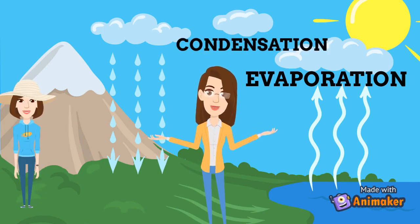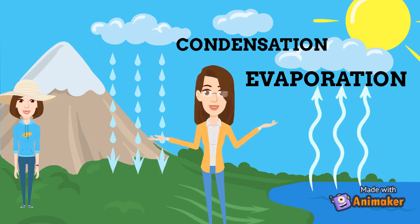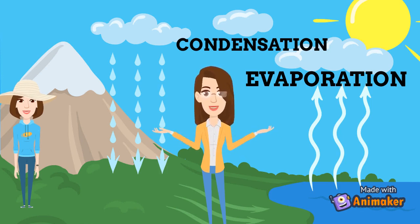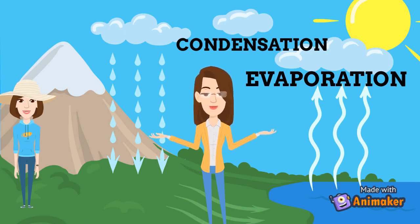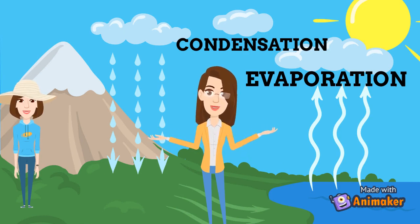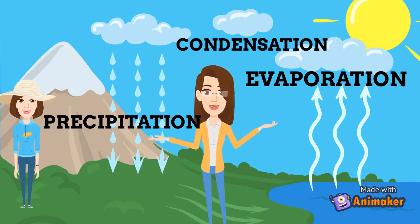When the clouds become heavy — that means when they are filled with water — then rainfall and snowfall occur. So the water comes back to the lake, stream and river. This is how the process of the water cycle occurs: water goes up by evaporation, changes into cloud by the process of condensation, and then falls down again in the form of rain by the process of precipitation.